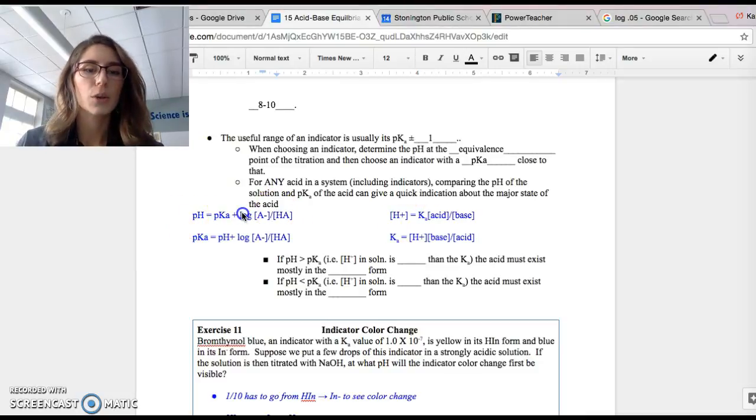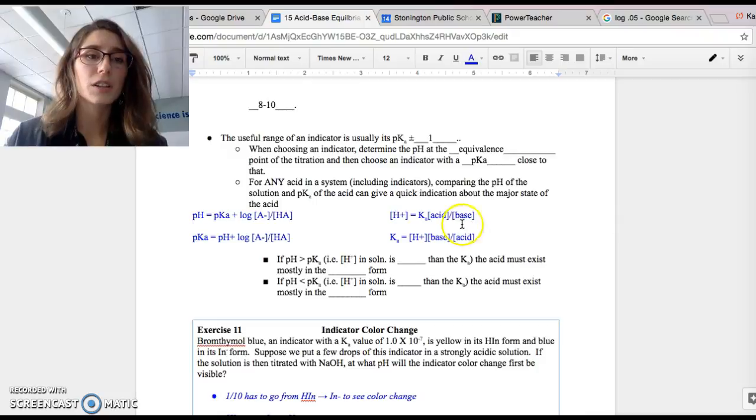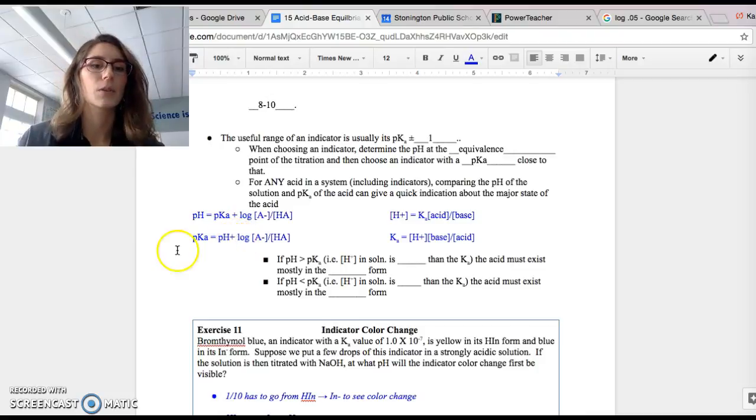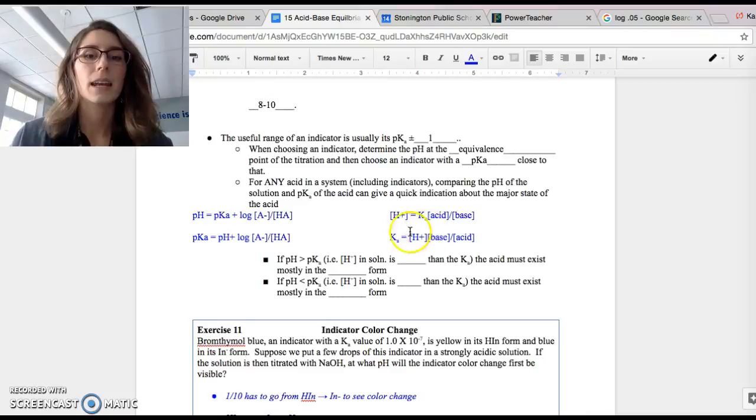This first one is the HH equation, the Henderson-Hasselbalch equation, and then right next to it on the right, we have my shortened version of the equation. And then in each case, I've just rearranged them because you may find it helpful to look at them in a different way. So I rearranged the HH equation for pKa, and then I rearranged the shortened version for just Ka.